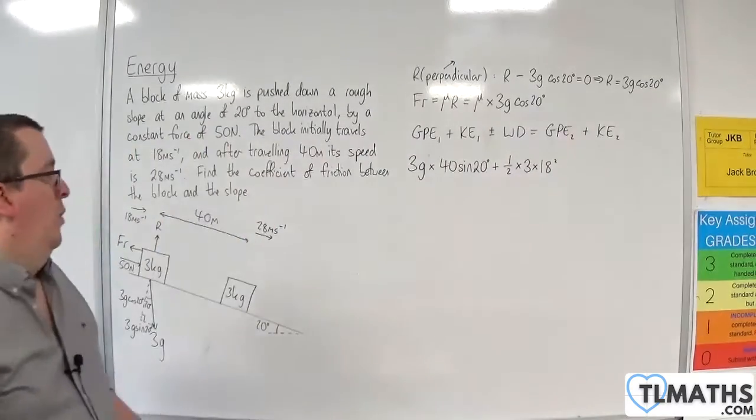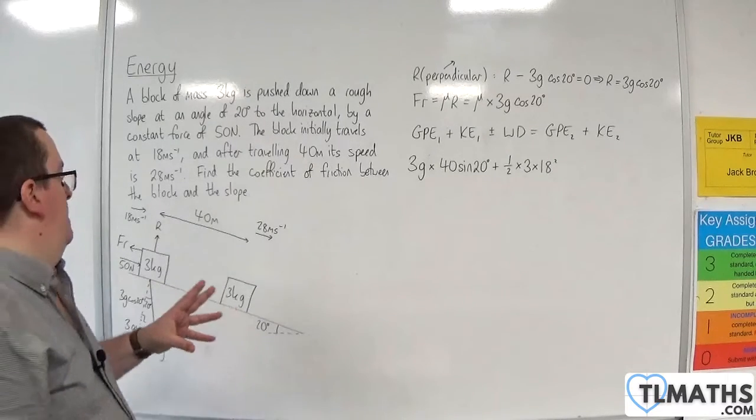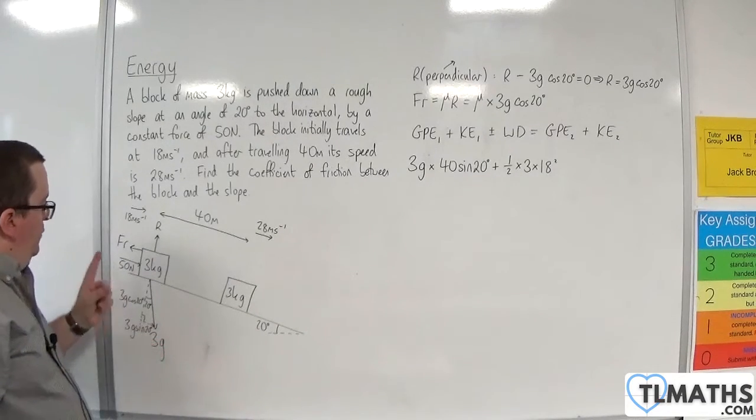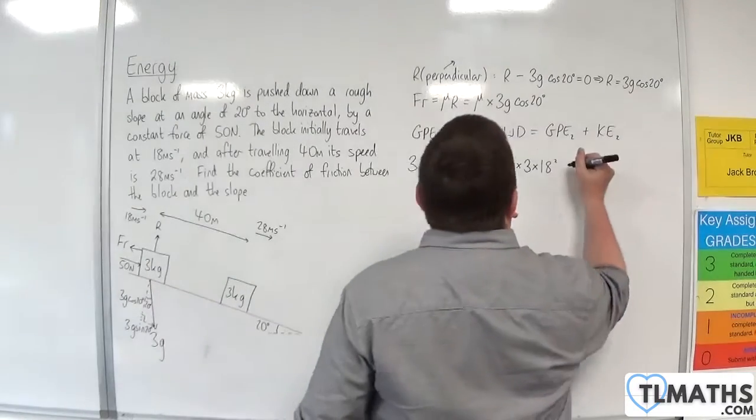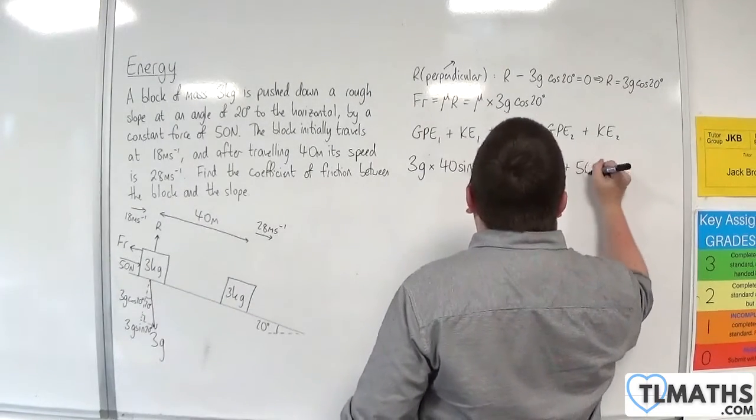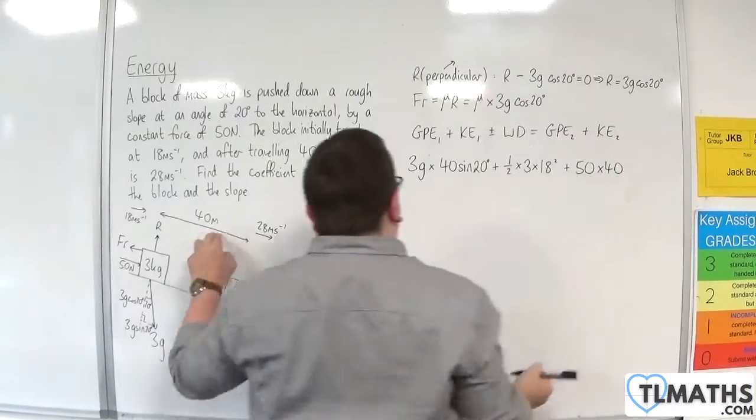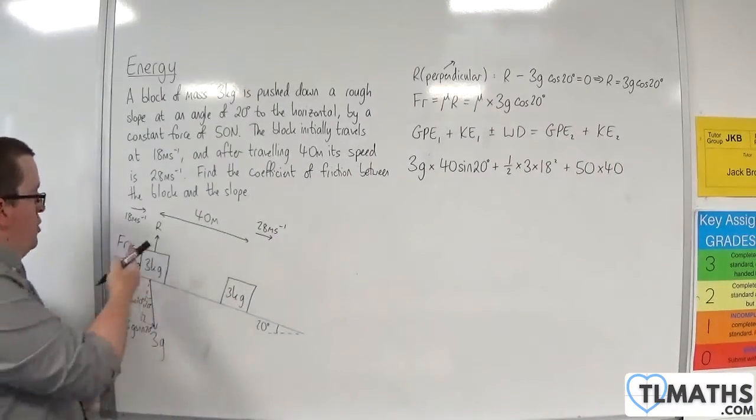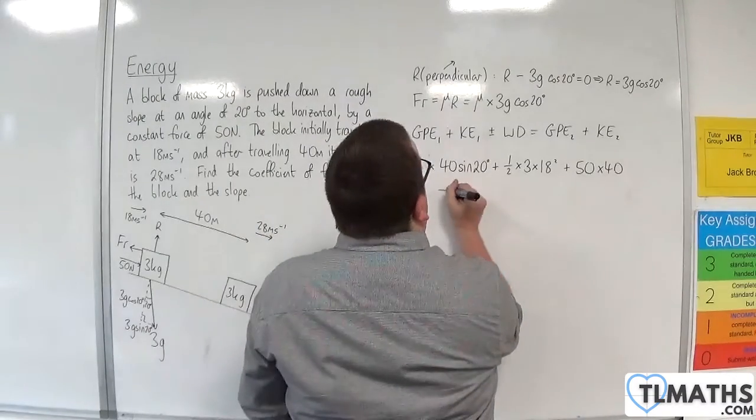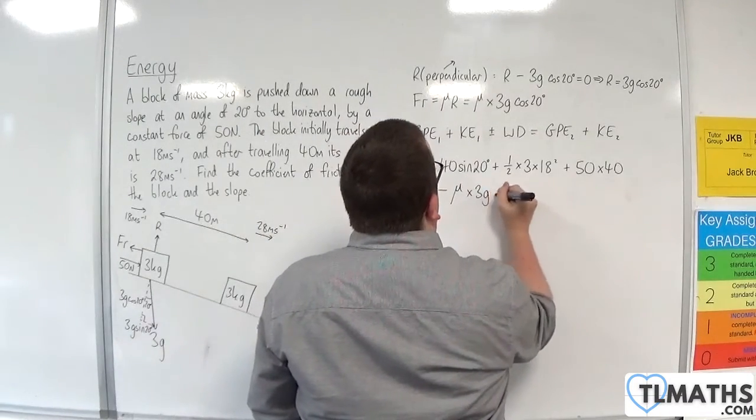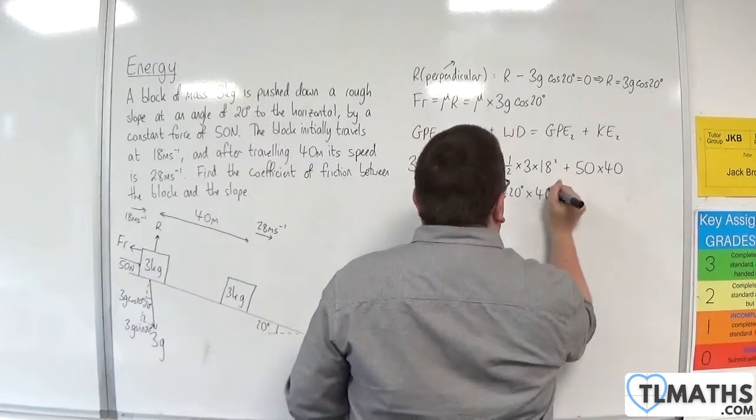Then we've got the work done. Now, there are two forces acting in the direction of motion. We've got the 50 Newton force, which is putting energy into the system. So we're going to have plus 50 Newtons for 40 meters. Then we've got the frictional force taking energy out of the system. So take away mu times 3G cosine 20 times by 40 meters.